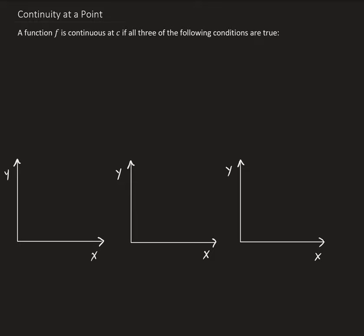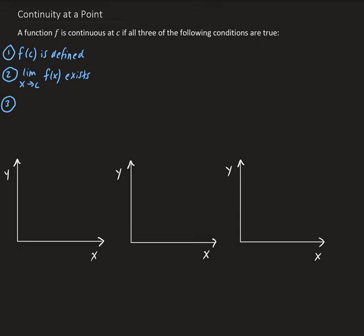In this lesson, I'm going to talk about continuity at a point. A function f is continuous at some point c if all three of the following conditions are true. The first condition is that the function evaluated at c is defined. The second condition is that the limit as x approaches c of the function exists.